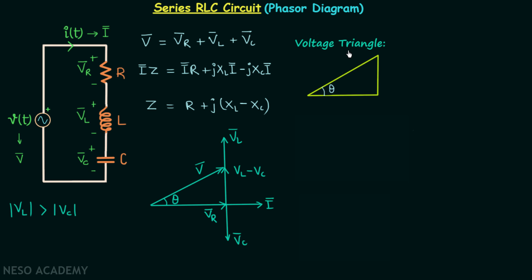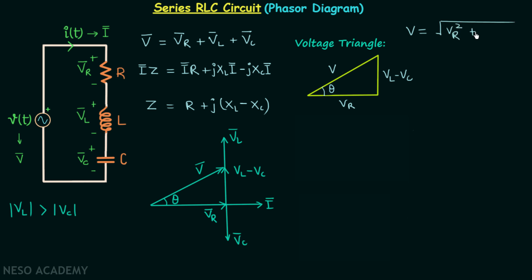Now we will move on to the voltage triangle. The angle is θ, the hypotenuse is voltage V, the perpendicular is voltage VL minus VC, and the base is voltage VR. From this triangle we can say that voltage V equals the square root of VR² plus (VL minus VC)².